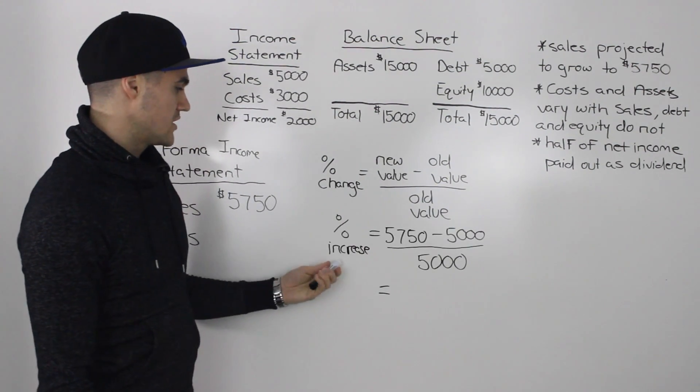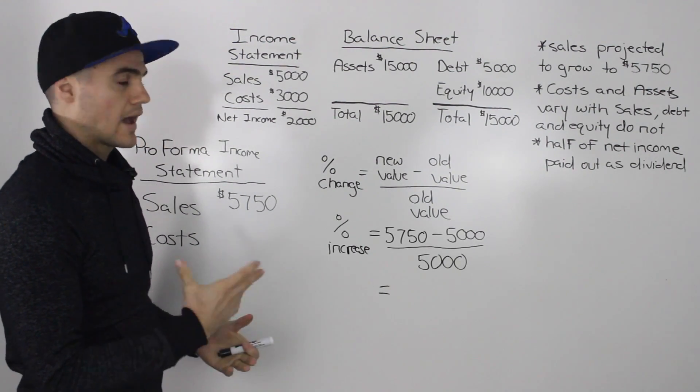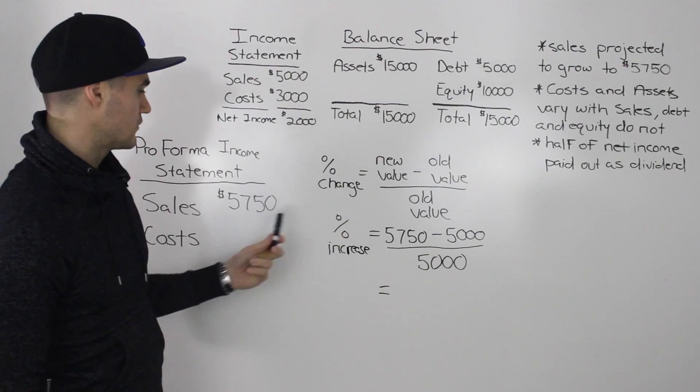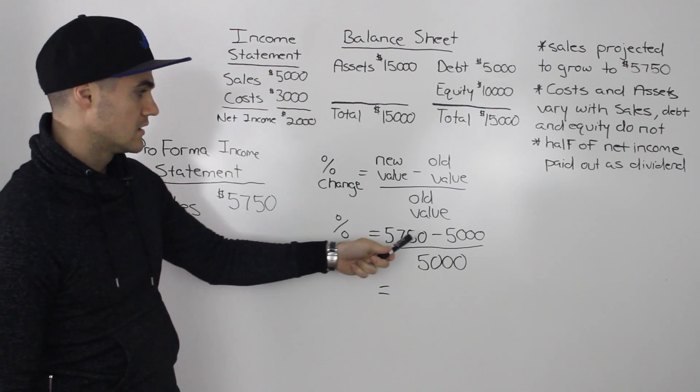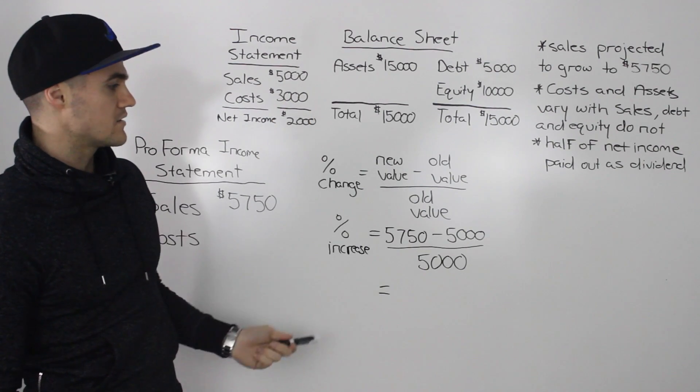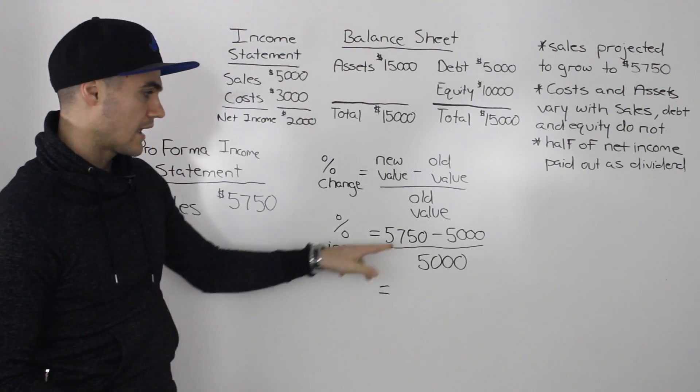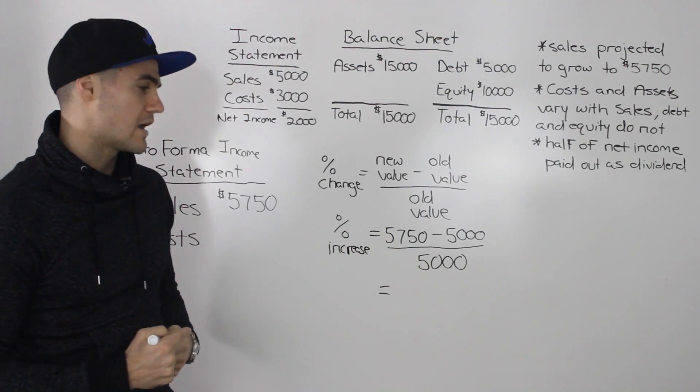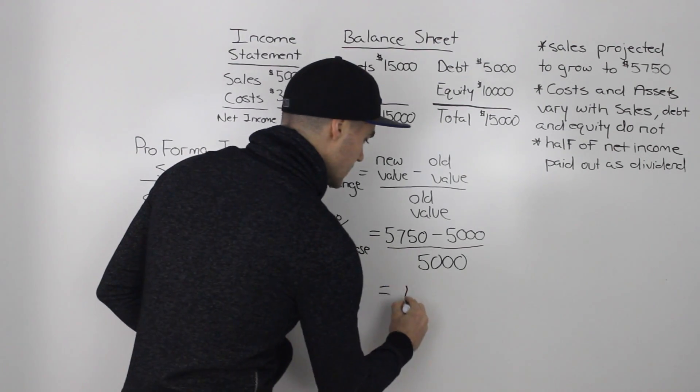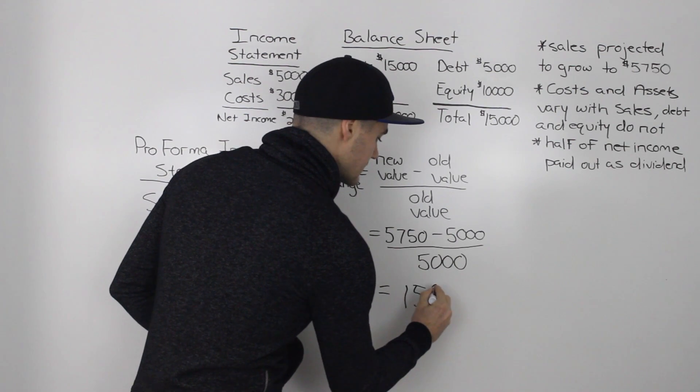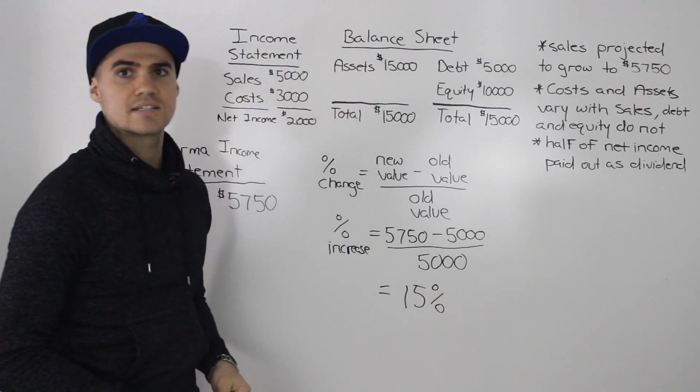So to specifically find the percentage increase in sales, in our example, we would take the new value of the sales, the $5,750, subtract the old value of $5,000 and divide that by the old value of $5,000 again. And if you do that in your calculator, you would get 0.15 or a 15% increase in sales.